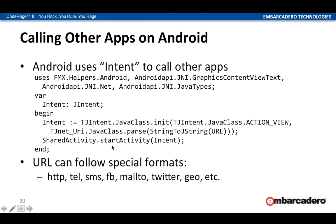We're calling StartActivity with the intent, and there are a couple of other options besides StartActivity as well. The URL you provide can have a few different format prefixes: 'http' to go to a web page, 'tel' to go to the dialer, 'sms' to send an SMS message, 'facebook' to launch Facebook and go to a specific page, and 'geo' to go to the map. Anyone can register their app to handle different URL types in order to receive messages — these are just common examples.